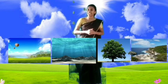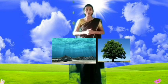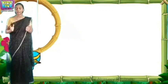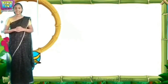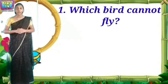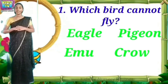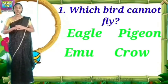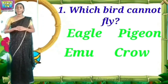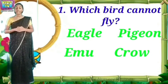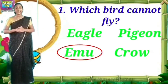Now these are the things about animals and where they live. Miss is going to ask you a few questions from the topics we have learnt. The first question: which bird cannot fly? Options are eagle, pigeon, emu, crow. The answer is emu. Emu is a bird that cannot fly. The second question: which animal lives only in water? Options are goat, fish, sparrow, cow. The answer is fish. Fish is the animal that lives only in water.